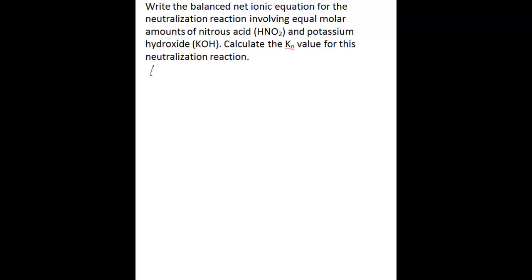The first thing you want to do is identify the acid-base properties of the two substances involved in the neutralization reaction. Nitrous acid, or HNO₂, has a Ka value of 4.5 times 10 to the negative 4. You could look this up in a table of acid dissociation constants. So you know this is a weak acid.